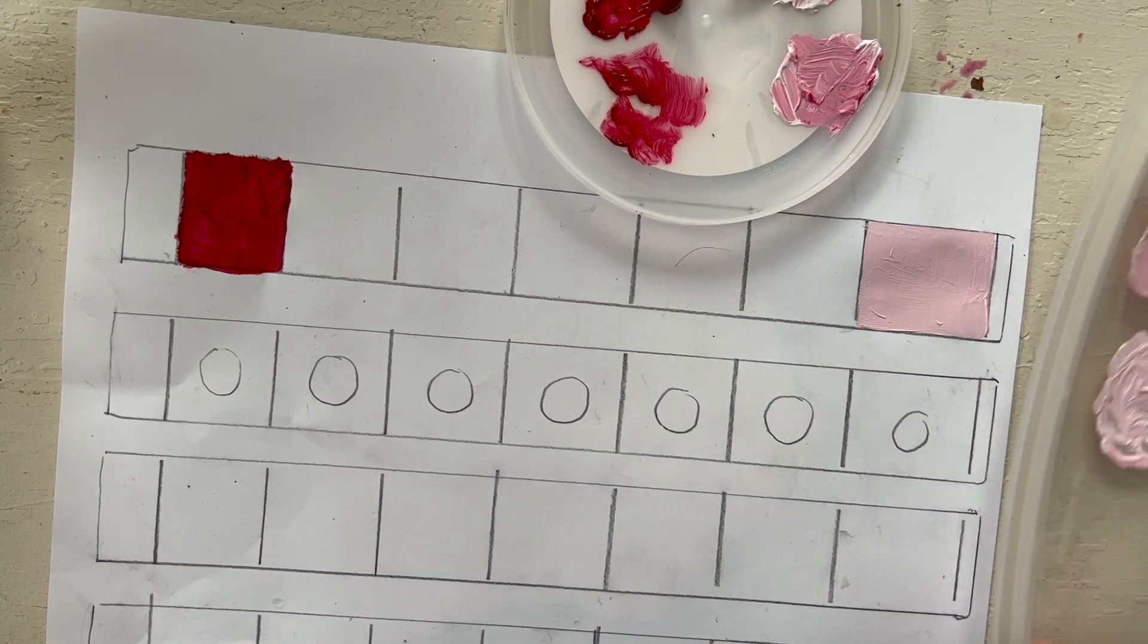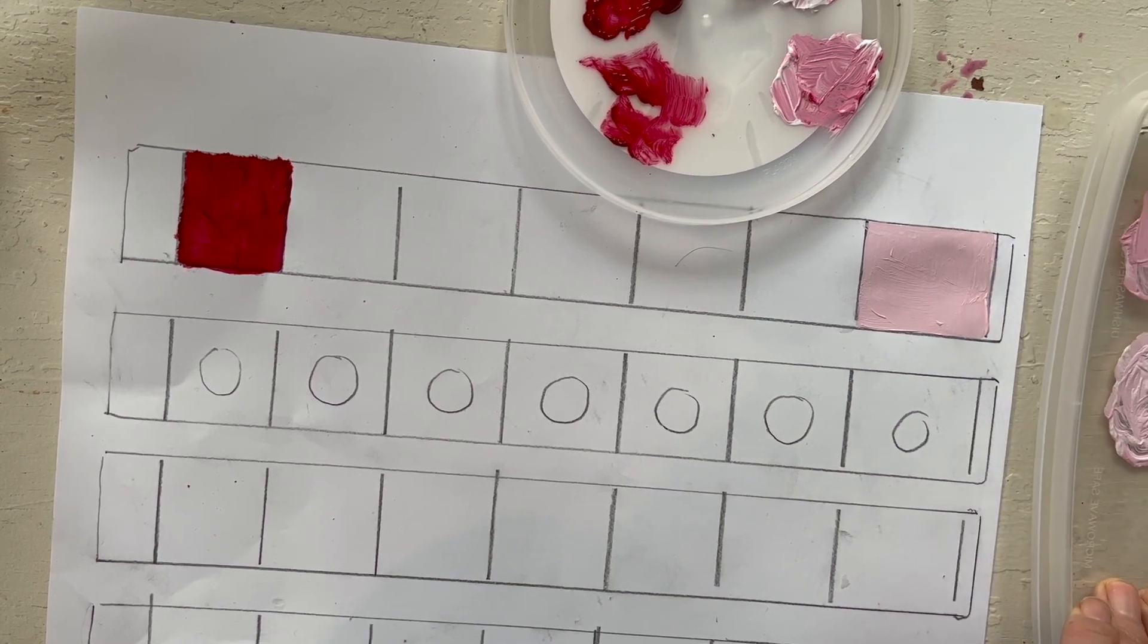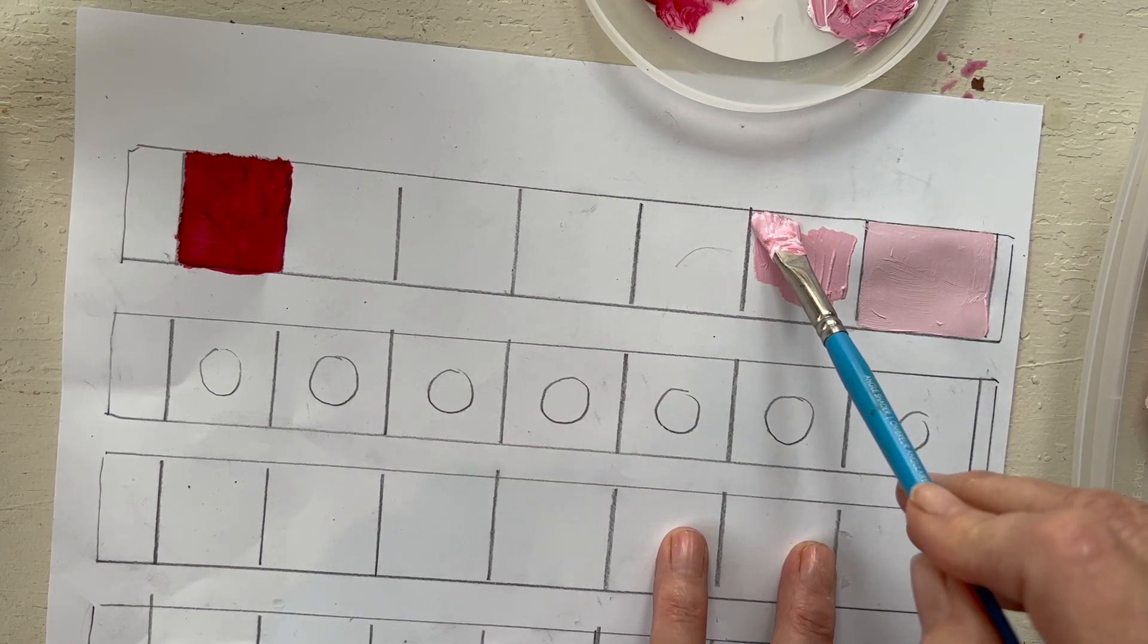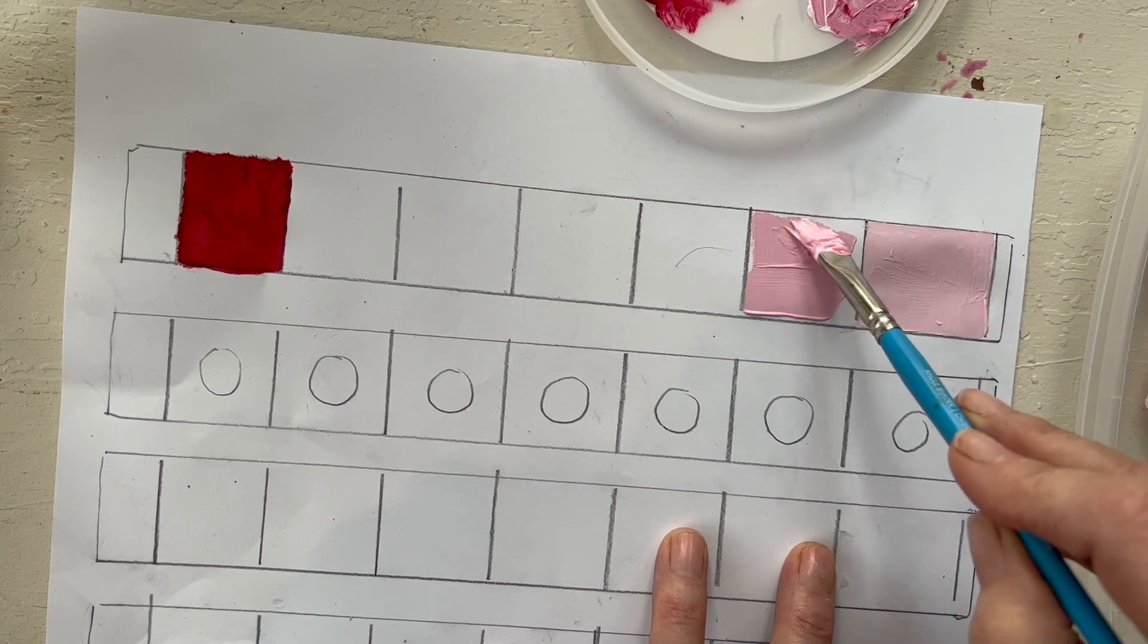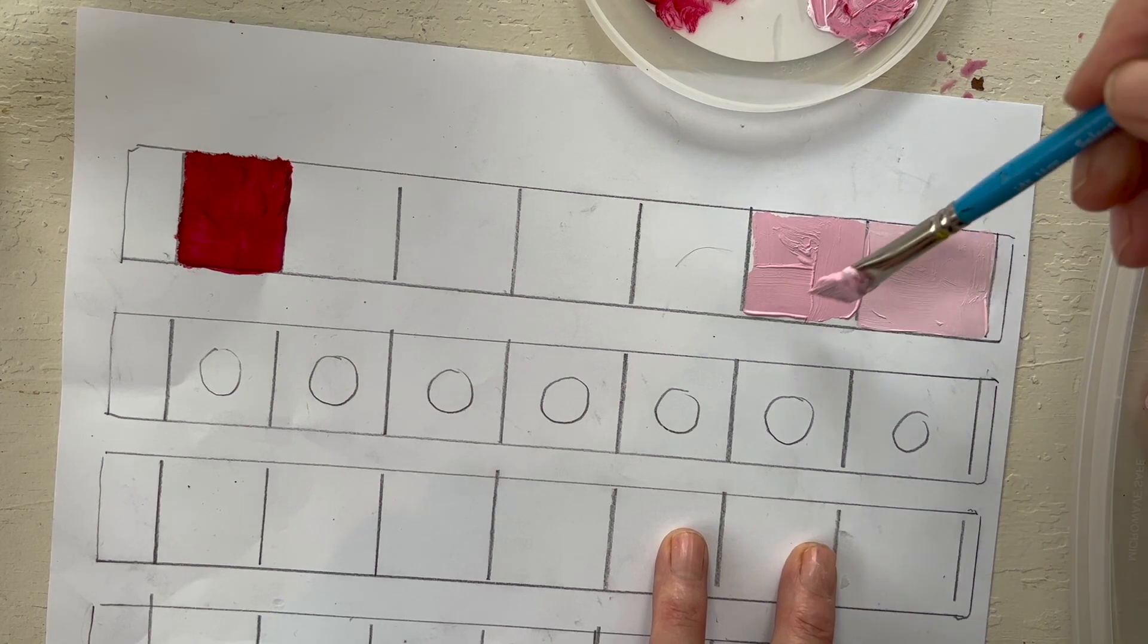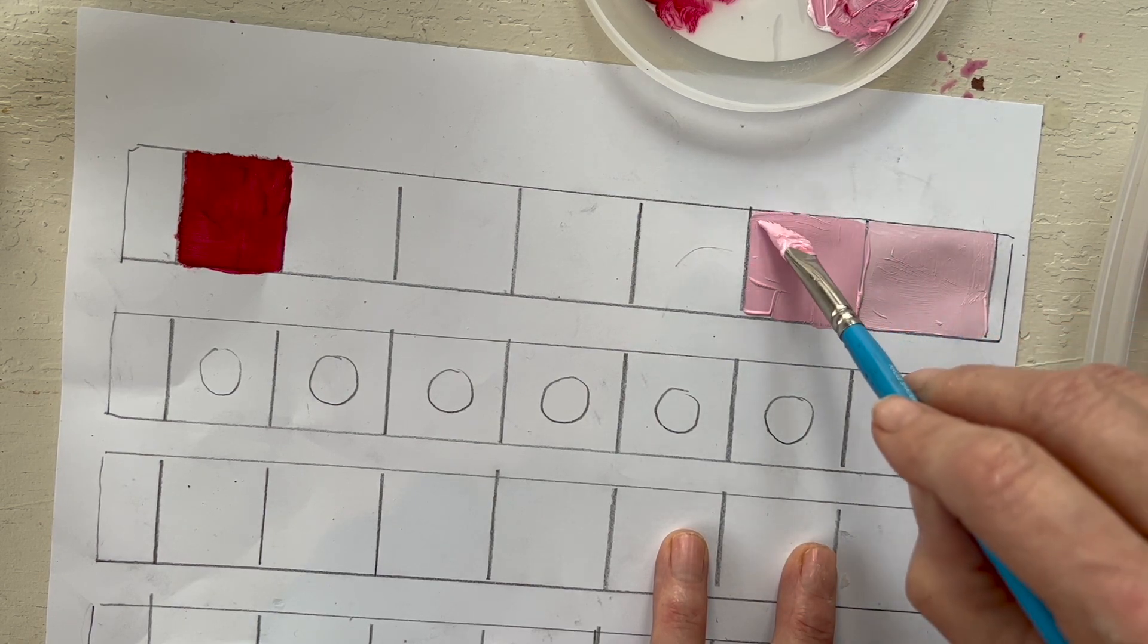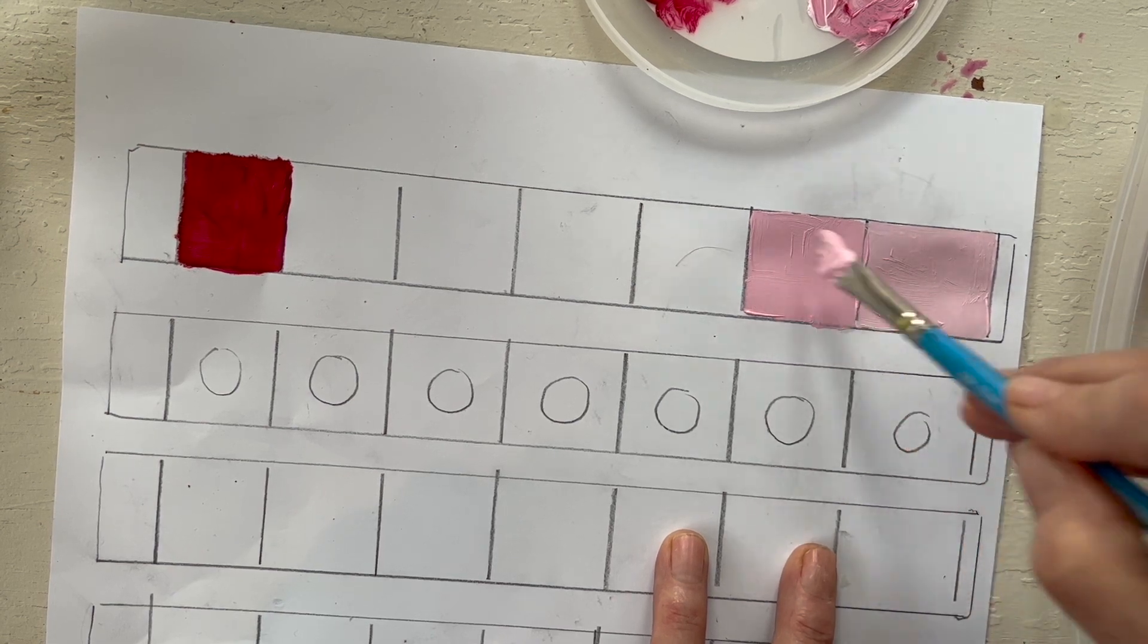Now, I've already mixed this little bit darker one. I might just take that now, and do the next level. Now, when you do this, you want to see a definite difference between the two colors. But you don't want to see a big jump. So do these two look different enough? That's your question. And if they do, if they look different enough, but it's not a big jump, then you're probably good.